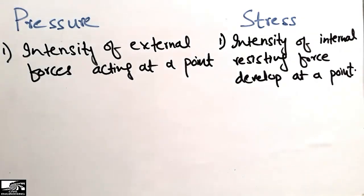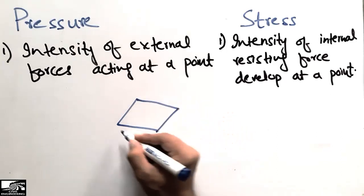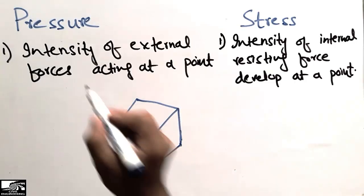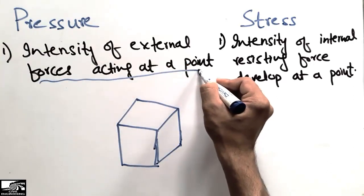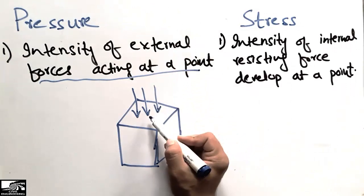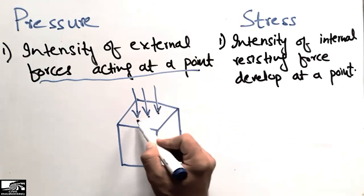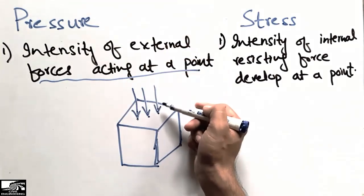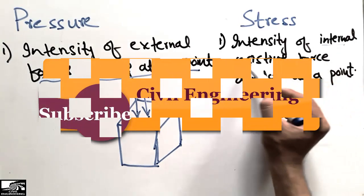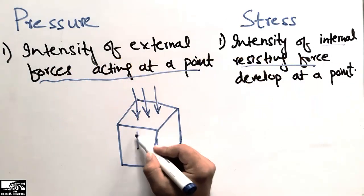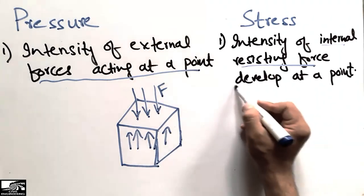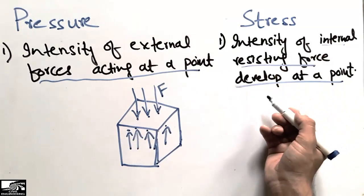I will explain the difference by considering a diagram. For any object, when a load acts on it, the intensity of external forces acting at a point is called pressure. Stress, on the other hand, is the intensity of internal resistance forces — the resistance of the material to the applied force — developed at a point. So the external force is pressure, and the internal resistance is stress. That is the main difference between these two terms.